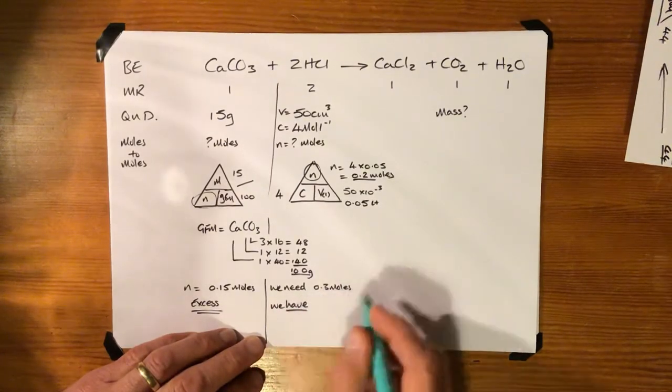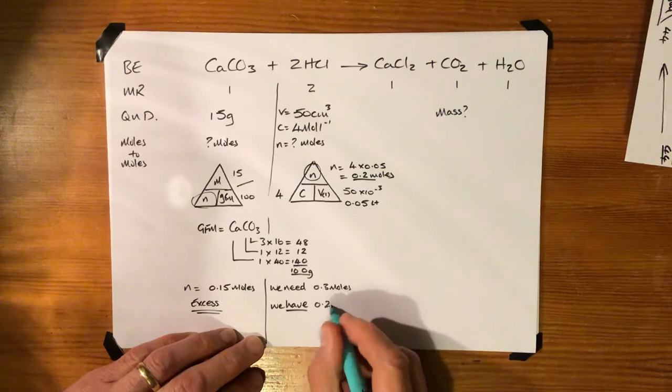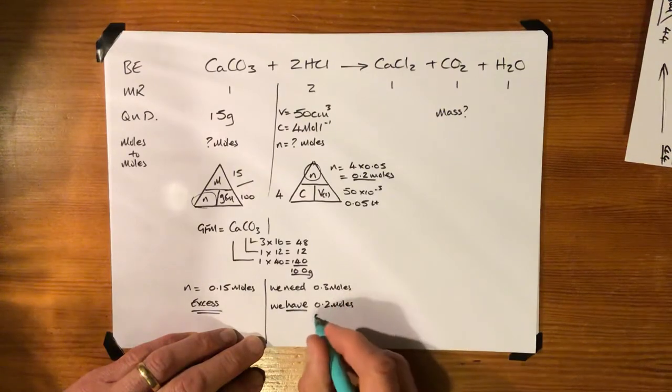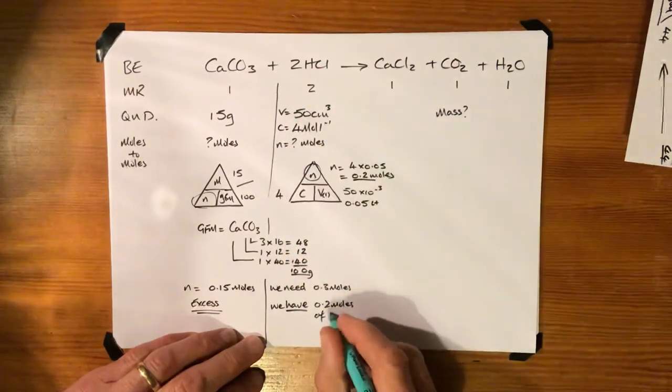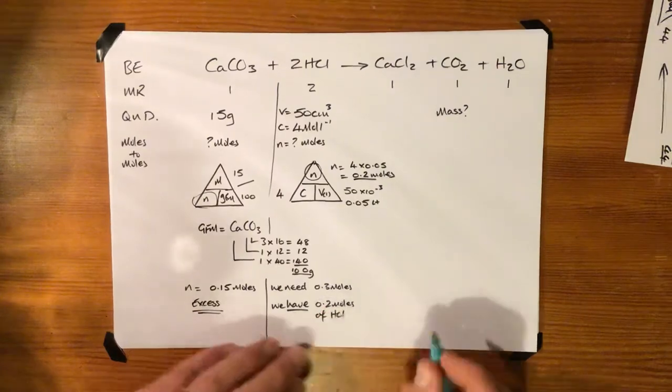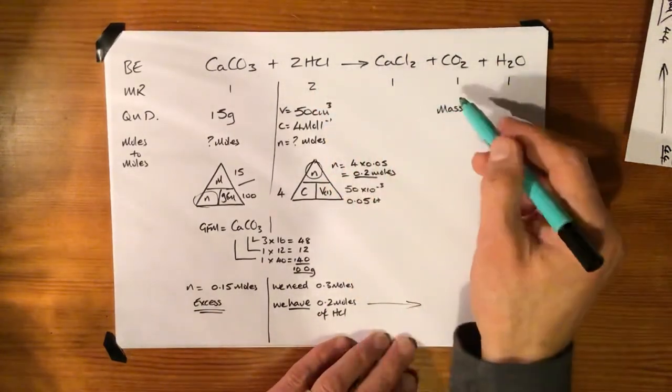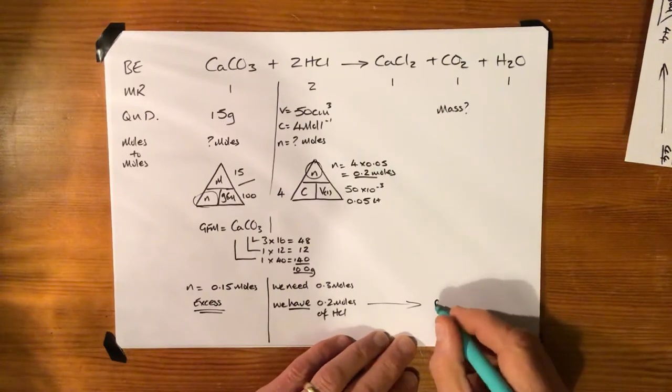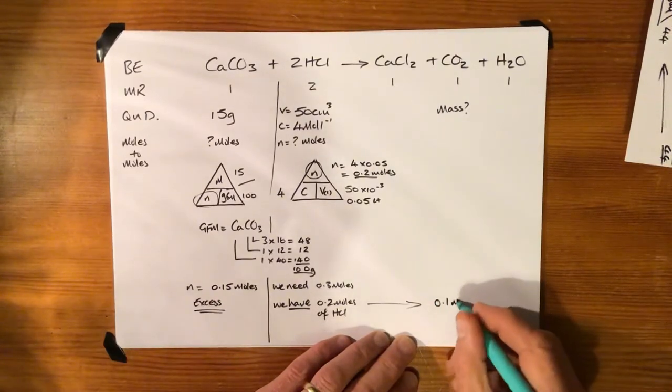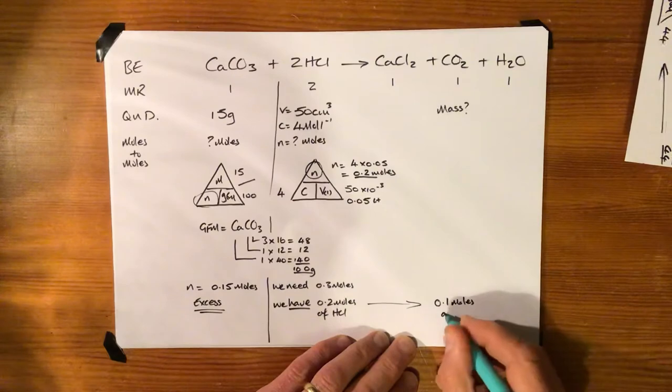So we've got, we have 0.2 moles of HCl. Yeah, what's that going to give us in terms of carbon dioxide? Well, it's a two to one, so we're going to get 0.1 moles of CO2.